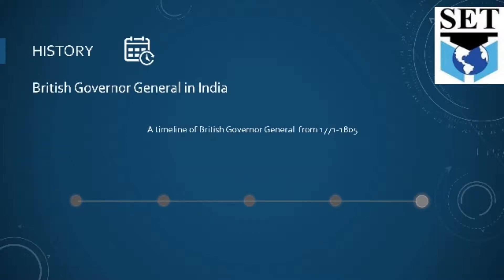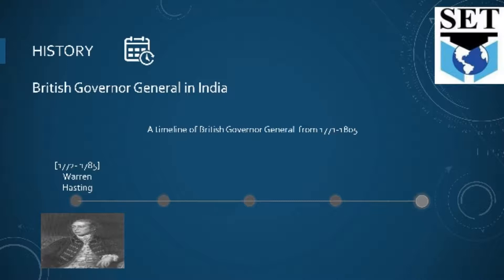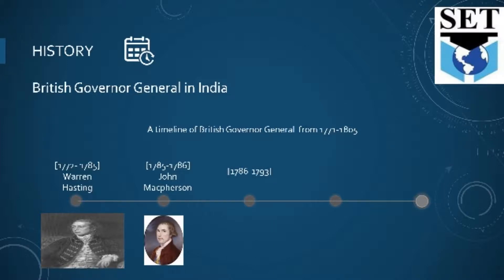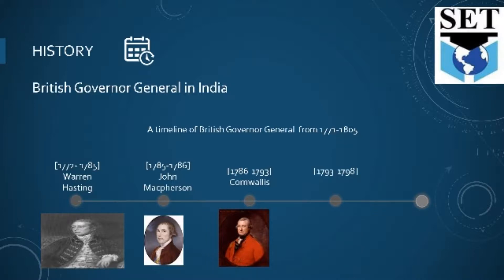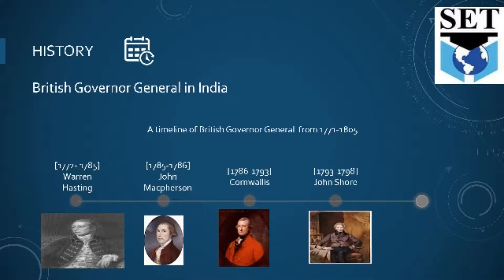Here is the timeline — look at it very carefully. From 1772 to 1785, Warren Hastings came first; he was the Governor of Bengal and then became the Governor General of most parts of India. After Warren Hastings, from 1785 to 1786, John Macpherson came. Then from 1786 to 1793, Cornwallis came. From 1793 to 1798, John Shore served, and after John Shore, from 1798, Wellesley came to rule over India.